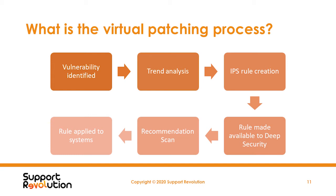Once that happens, Trend will form an analysis of that vulnerability to see whether or not there is enough information around the vulnerability to provide a reliable detection method, and also if the Deep Security system can protect against it. If it's a local exploit, for instance, Deep Security cannot protect against it because it is a network level detection and protection system.